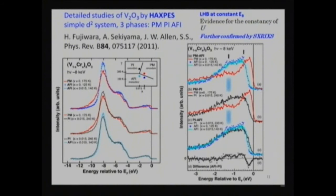In the case of V2O3, there are three phases: paramagnetic metal, paramagnetic insulator, and antiferromagnetic insulator. We measured all three phases by HAXPES and found that the lower Hubbard band is always present at the same binding energy. This proves that U is constant across the metal-insulator transition in this system, and only the critical U/W ratio is changed with temperature. Such a long-standing controversy is now solved.